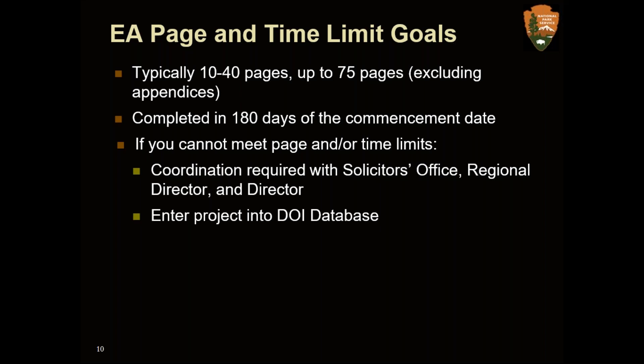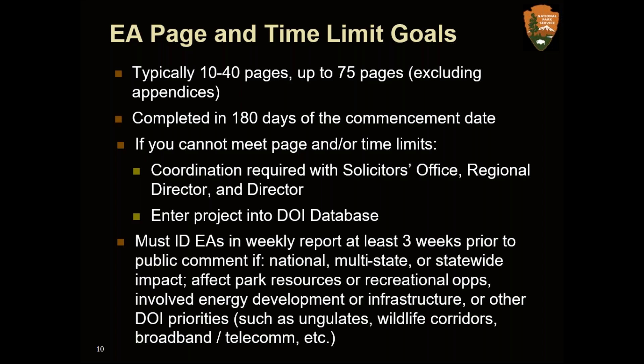If you can't meet the page or time limits, you must enter the project into the DOI NEPA database for official departmental-level tracking. Additionally, guidance from March 2019 states that even if you're meeting page and time limits, you must identify your EA in the weekly report at least three weeks before public comment begins if it has national, multi-state, or statewide impact; could affect park resources or recreational opportunities; or involves energy development, infrastructure, ungulate management, wildlife corridors, broadband, or telecommunications.